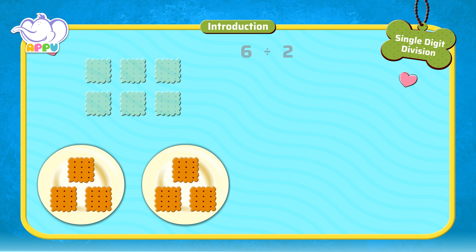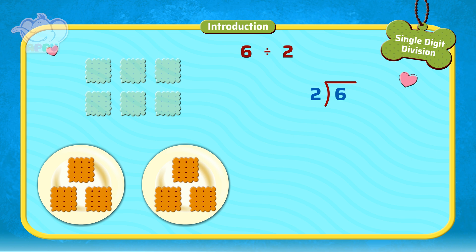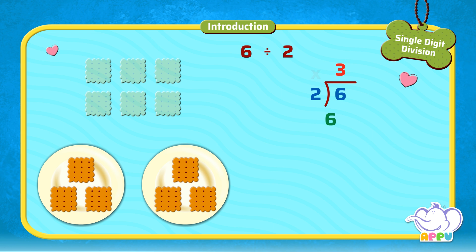To divide 6 by 2, we write the division bracket and write 2 outside the bracket and 6 inside the bracket. We figure out how many 2's does it take to make 6, which is 3. Next, we multiply 2 and 3 to get 6. Then we subtract: 6 minus 6 equals 0.